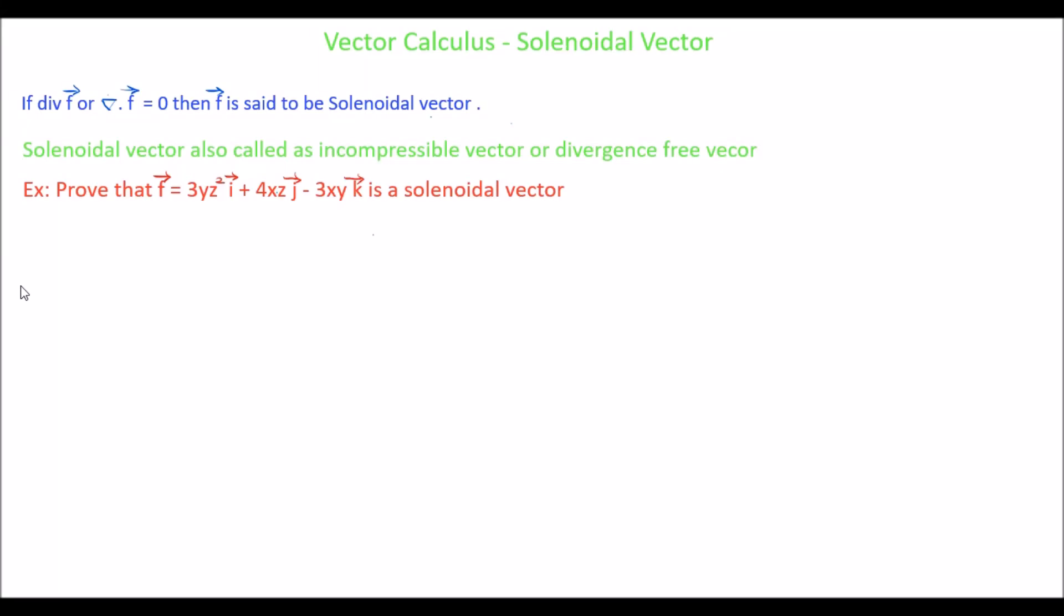In this tutorial we will see how to check if the given vector is a solenoidal vector or not. The condition is if the divergence of f vector, or del dot f vector, is 0, then f vector is said to be a solenoidal vector. The solenoidal vector is also called an incompressible vector or divergence free vector.